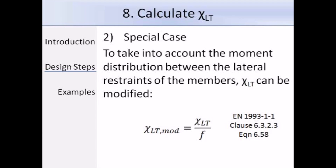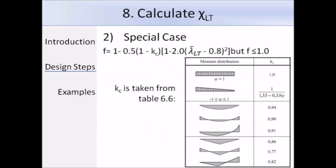The expression for f given in the Eurocode requires the values of lambda bar LT and K_C. Lambda bar LT has already been calculated, so all we need to determine is K_C, which is a factor depending on the shape of the bending moment diagram. Table 6.6 gives the values of K_C for a variety of moment distributions. If we have a linear moment diagram, we need to determine psi, where psi is the smaller end moment divided by the larger end moment. The larger the value of coefficient C1, the more beneficial f becomes in giving additional resistance.